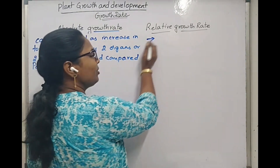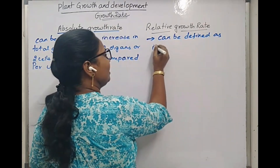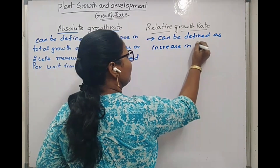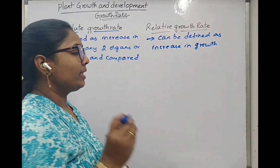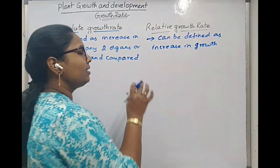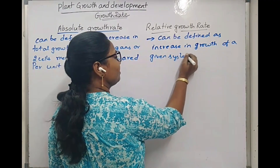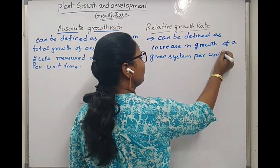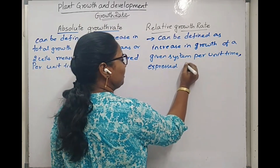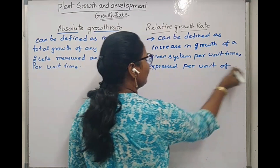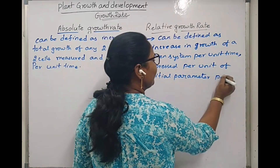Then what is relative growth rate? Relative growth rate can be defined as increase in growth of any one organ or any one cell per unit time. But it is expressed in terms of the initial growth that a particular cell or organ is having of a given system per unit time, expressed per unit of initial parameter per unit time.